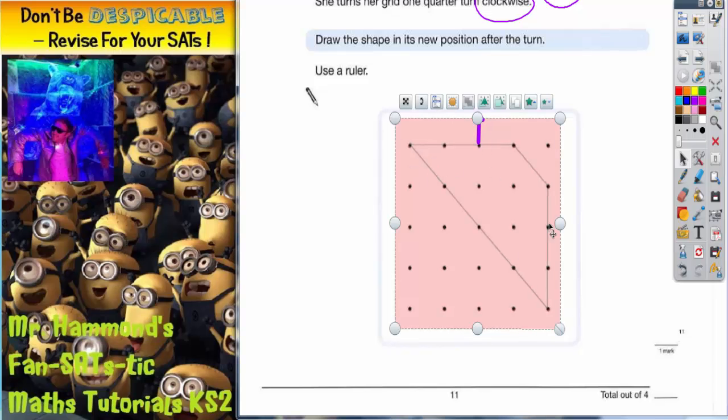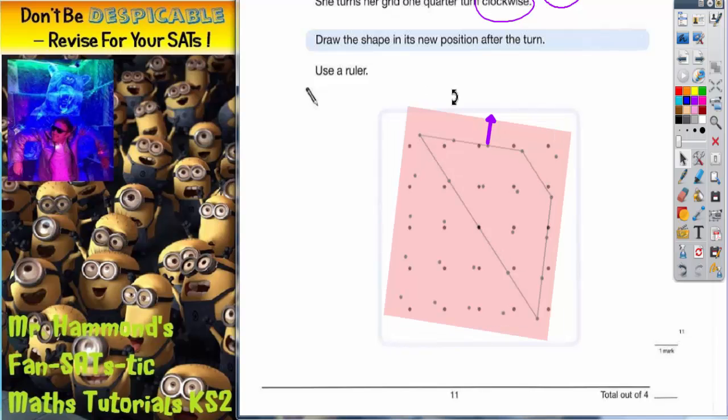Now that is the shape in its original position on the grid at the top of the exam page. So what I need to do is get my arrow pointing north. One quarter clockwise turn will see that arrow pointing east.